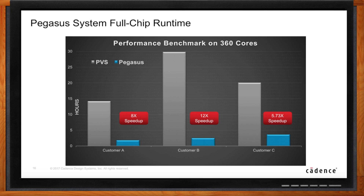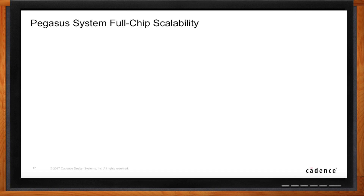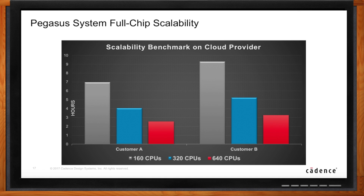Scalability is something we really want to push. Benchmarks with customers on cloud show near-linear scalability up to 960 CPUs. We also showed nice scalability at 160, 320, and 640 CPUs on less advanced nodes. As soon as you go to FinFET technology, thousand-CPU scalability is there. And we're not going to stop there — at 10, 7, 5, 3 nanometer, you will need thousands of CPUs, and you'd better be pretty close to linear.